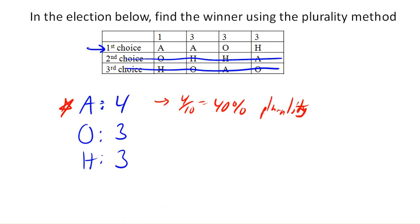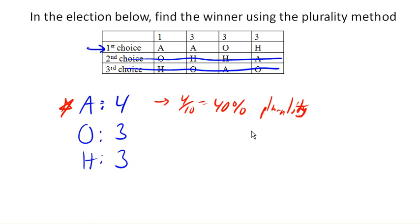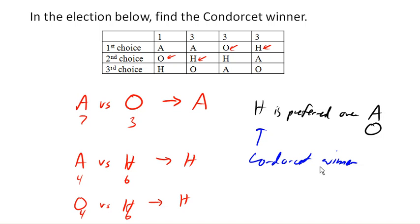So in this case, because H is preferred over all other candidates, we call H the Condorcet winner, or the Condorcet candidate. And in this case, plurality method did not choose the Condorcet winner. Now not every election has one, but this one does. And so this is what we call a violation of a fairness criteria.